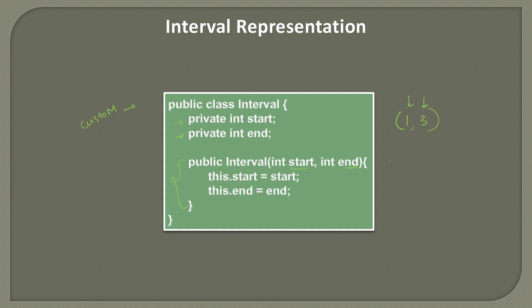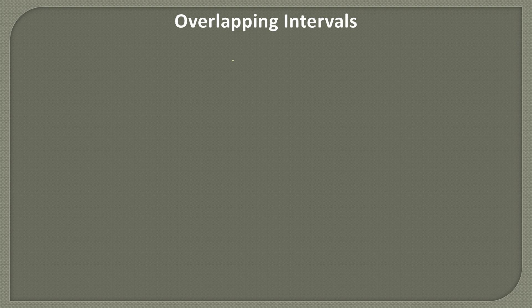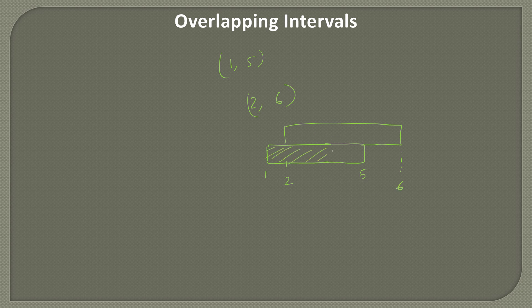Now let's look at the concept of overlapping intervals. What are overlapping intervals? If we have interval 1,5 and another interval 2,6, and we plot these on a number line, you can see that they are actually overlapping in the region from 2 to 5. This suggests that these two intervals are overlapping with each other in the region 2,5.